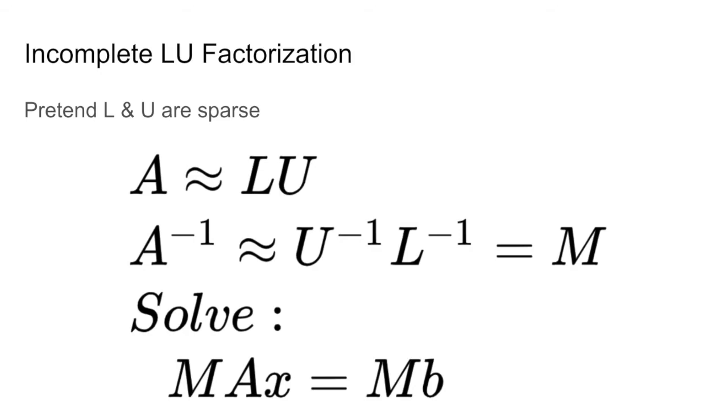We then solve the linear equation MAx equals Mb, and this is going to be much easier to solve since, as we said before, MA is approximately equal to the identity matrix.